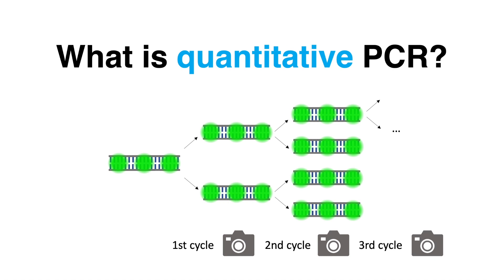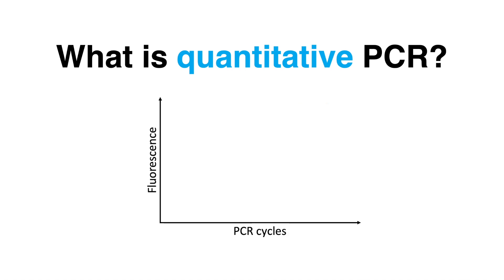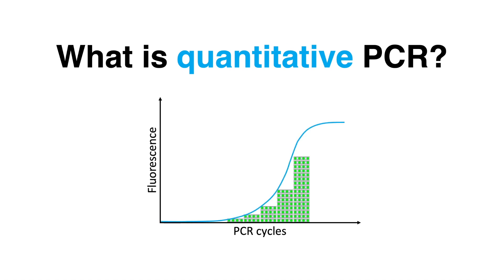In QPCR, the product amplification is therefore observed in a quantitative perspective. With each PCR cycle, the amount of PCR product doubles, which can be detected as an increase in fluorescence. This generates a classic QPCR curve.